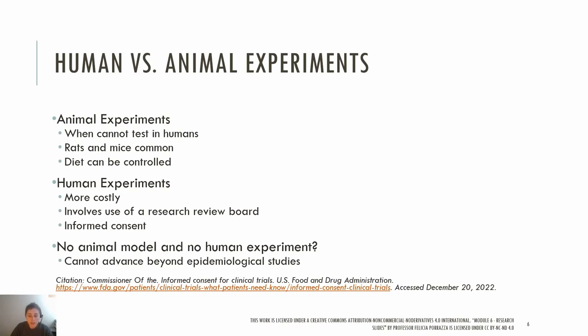There are limitations of animal research. First, an animal's metabolism and physiology are different from humans. Animal research is considered preliminary and shouldn't be considered relevant to real-life decisions about how people eat. Before a research study can be conducted with humans, researchers must obtain approval from a research review board.